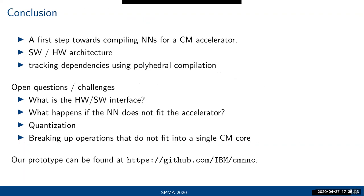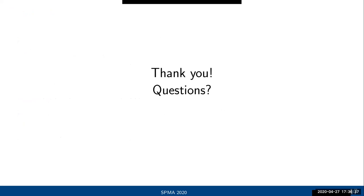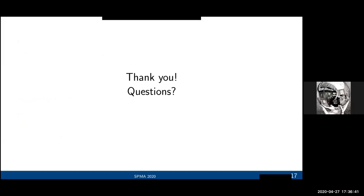To conclude, I gave a brief overview of a first step towards compiling neural networks for a computational memory accelerator. I spoke about the software and hardware architecture and touched on how to track dependencies using polyhedral compilation. This is still very early work — open questions include the proper hardware-software interface, what happens if the network doesn't fit the accelerator, and how to deal with quantization and operations that cannot fit into a single core. The code is available on GitHub, and I'm happy to answer questions online or offline.